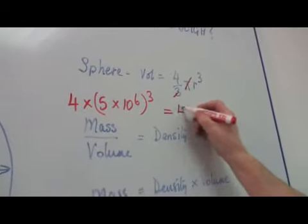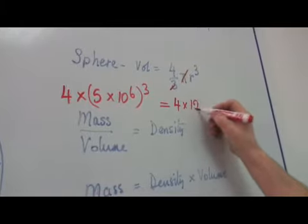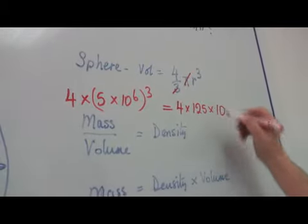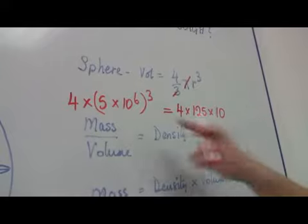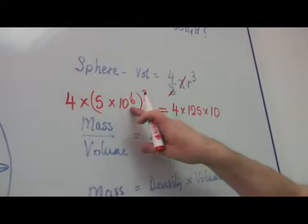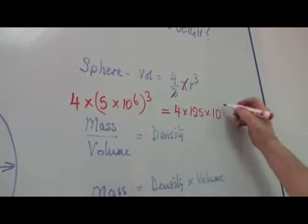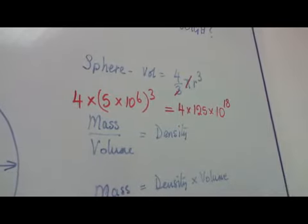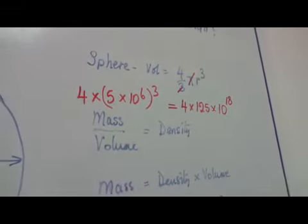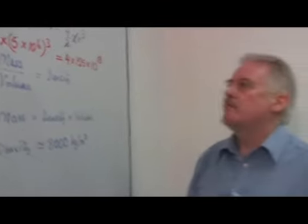So it's 4 times 125 times 10 to the power... well, to multiply 10 to the 6th by itself, it becomes 10 to the 12th. And again, 10 to the power 18. That's 1 with 18 zeros. It's getting to be a quite big number.